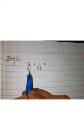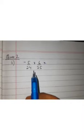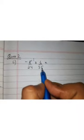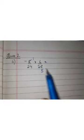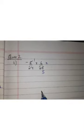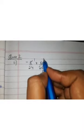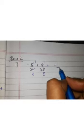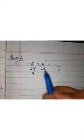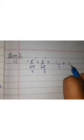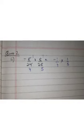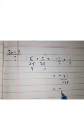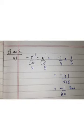Look at the top: we have 5, and at the bottom: 24. 5 cannot divide 24 so we leave it. Then we check 5 with 25 — 5 can divide 25. So we write 5÷5=1 and 25÷5=5. Similarly, 6 is here and 24 is there — 6÷6=1 and 24÷6=4. So what fraction remains is −1/4 multiplied by 1/5, that is (−1×1)/(4×5) = −1/20, and this is our answer in simplified form.